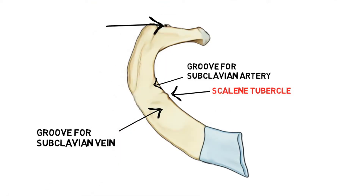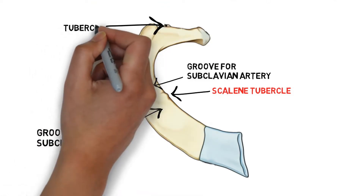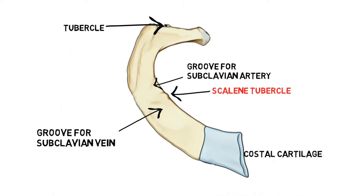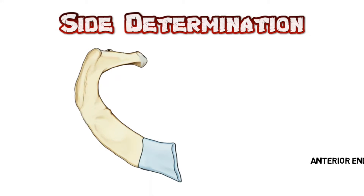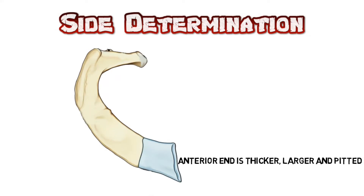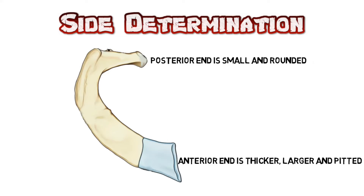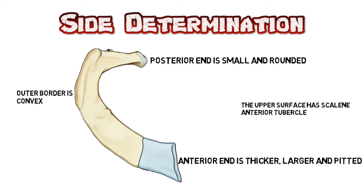This is the tubercle of the rib, and the area in blue is the costal cartilage by which the rib is attached to the sternum. For side determination: the anterior end is thicker, larger, and flattened. The posterior end is small and rounded where the head is situated. The outer border is convex, and the upper surface has the scalene anterior tubercle.